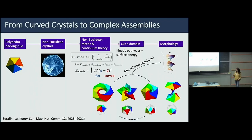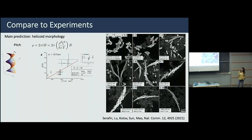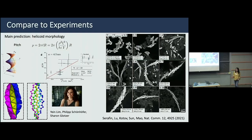For the tetrahedra problem, the morphology we find are helicoids. We can quantitatively calculate the shape — particularly the pitch of these helicoids — as a function of the interaction parameters of the tetrahedra. We find qualitative agreement with experimentally measured pitch. By changing the solvent properties, they can change the electrostatic repulsion, and we find that the pitch of the helicoid changes accordingly.